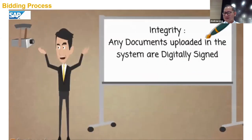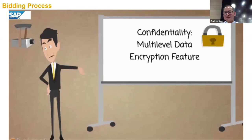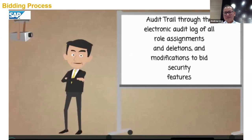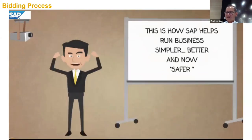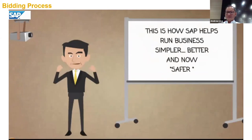You might be thinking: how? First, integrity — any documents uploaded in the system are digitally signed. Second, confidentiality — ensured by implementing a multi-level data encryption feature. Sensitive price data in the system is encrypted. All technical documents are also encrypted. It enables an audit trail through an electronic audit log of all role assignments, deletions, and modifications to bid security features. This is how SAP helps run business simpler, better, and safer.